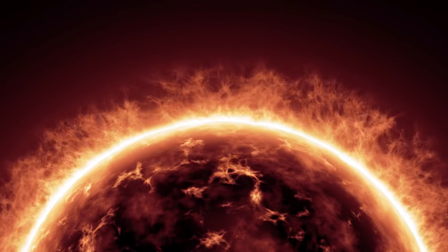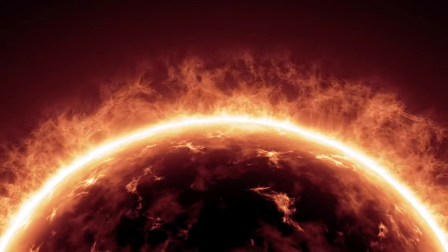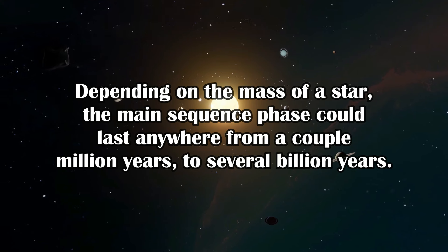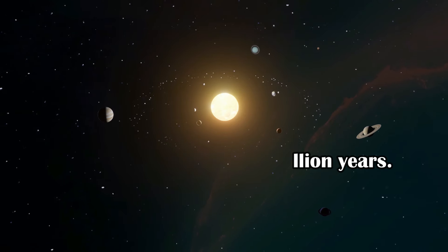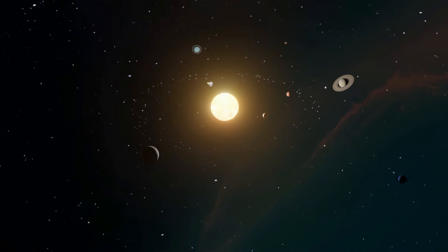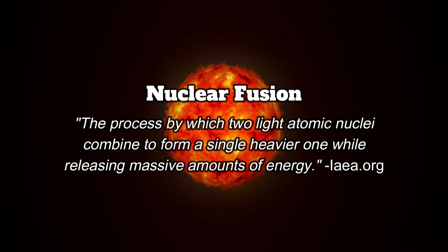Next, stars advance to their main sequence phase, which we are most familiar with, as our Sun has been a main sequence star for approximately 5 billion years so far. Depending on the mass of a star, this main sequence phase could last anywhere from a couple million years to several billion years. As the main sequence star glows, the hydrogen within its core is converted into helium in a process called nuclear fusion. By forming these higher elements on the periodic table, a massive amount of energy is released. When a star's hydrogen supply in its core begins to run out, the star can no longer generate heat via nuclear fusion, causing the core to become unstable and contract.